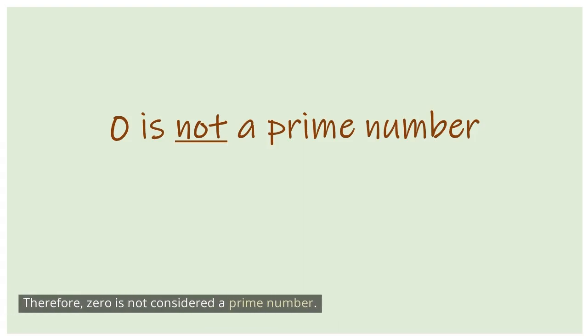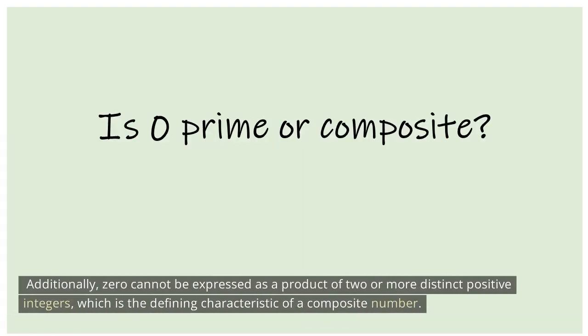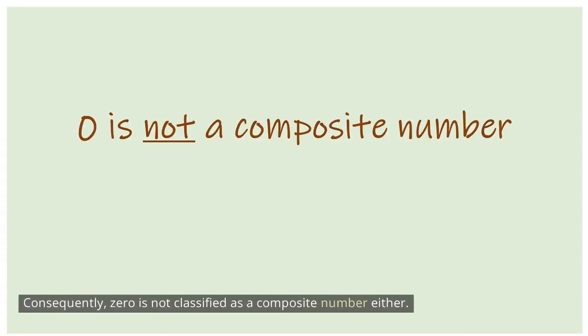Therefore, 0 is not considered a prime number. Additionally, 0 cannot be expressed as a product of two or more distinct positive integers, which is the defining characteristic of a composite number. Consequently, 0 is not classified as a composite number either.